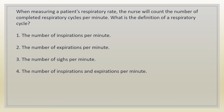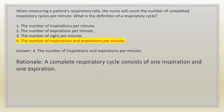When measuring a patient's respiratory rate, the nurse will count the number of completed respiratory cycles per minute. What is the definition of a respiratory cycle? 1. The number of inspirations per minute. 2. The number of expirations per minute. 3. The number of sighs per minute. 4. The number of inspirations and expirations per minute. Answer: 4. Rationale: a complete respiratory cycle consists of one inspiration and one expiration.